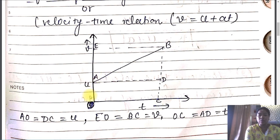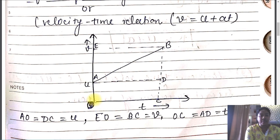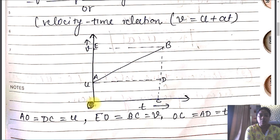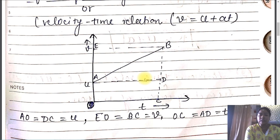We have to calculate the total area from O, A, B, C. Our graph starts from O, which is the initial position. So we cover the area of the closed region O-A-B-C-O. This closed area gives us the value of the distance covered by the object.